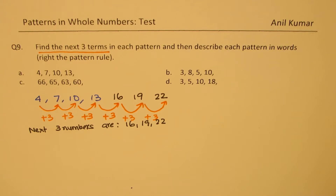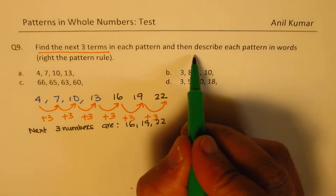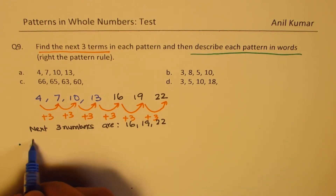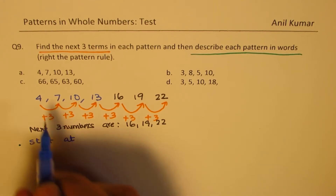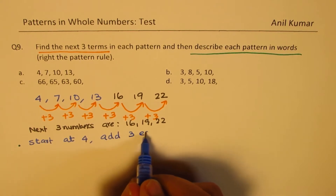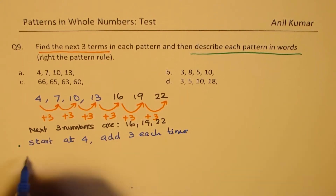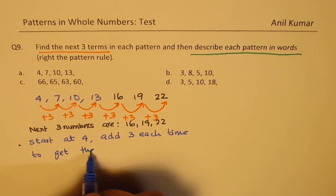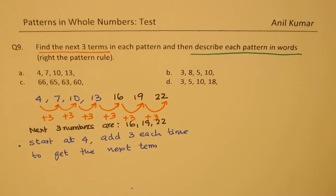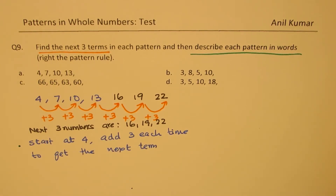The second part of this question is to describe each pattern in words. So now we need to describe the pattern. The important criteria is to always write down the first term. So you can start at 4, and then you add 3 each time. That is how you describe the pattern. Sometimes we can also write a pattern rule.